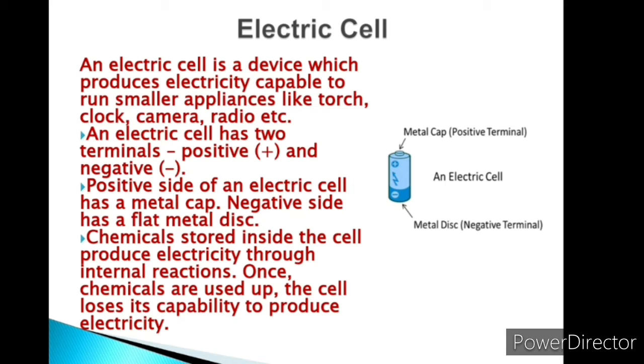Chemicals stored inside the cell produce electricity through internal reactions. Once the chemicals are used up, the cell loses its capability to produce electricity.